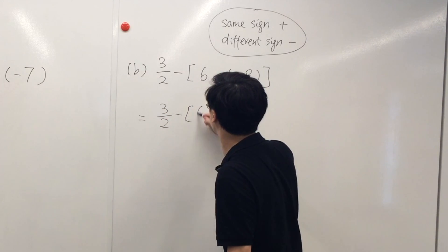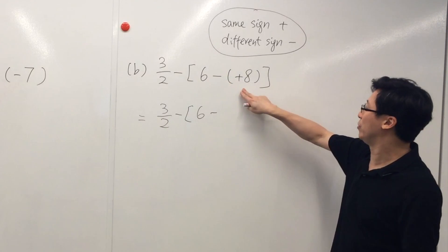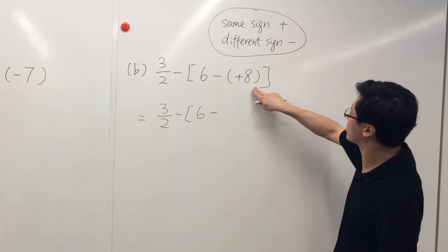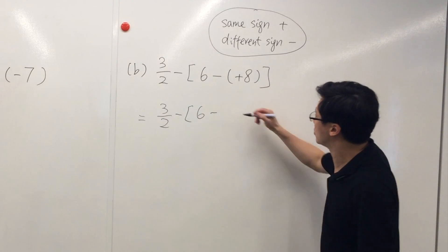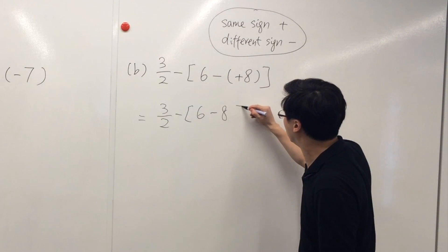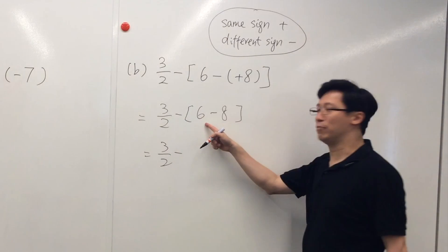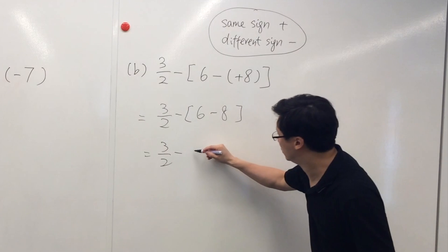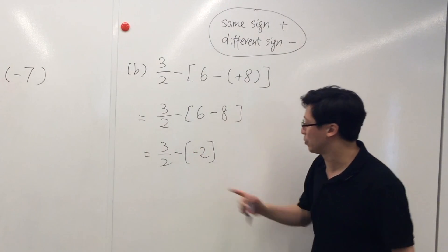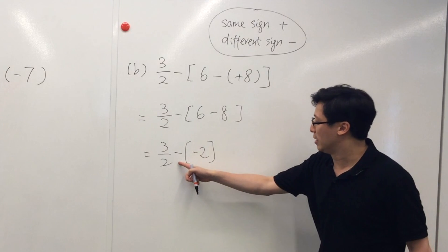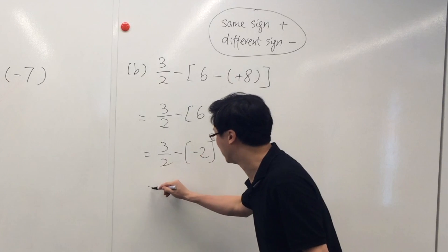We remove the bracket inside the square bracket. They are of different signs, so we end up with a negative number: 6 minus 8, and we have a negative 2. So don't forget to write a square bracket here. And now finally we can remove the square bracket. They are of the same sign, so we end up with a positive number.